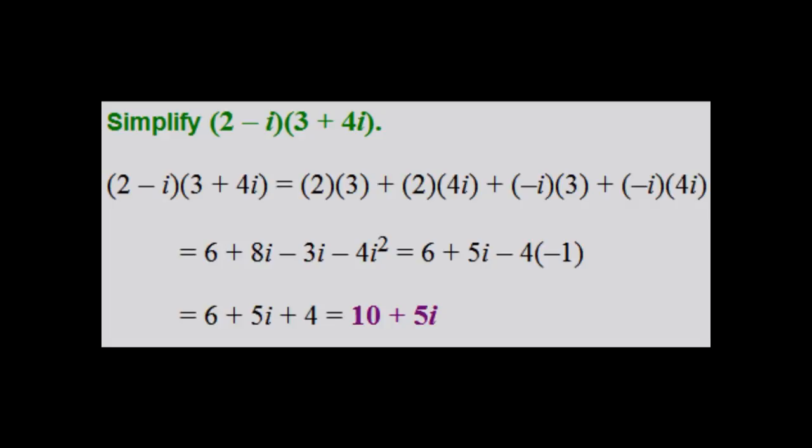Multiplying complex numbers is very much like multiplying binomials, in which a complex number is made up of two terms. In order to multiply, you would FOIL. Shown here is an example of multiplying complex numbers. After FOILing 6 plus 5i minus 4i squared, which becomes 6 plus 5i plus 4 because i squared is equal to negative 1. After adding the two real numbers together, you will get an answer in a plus bi form, which is 10 plus 5i.